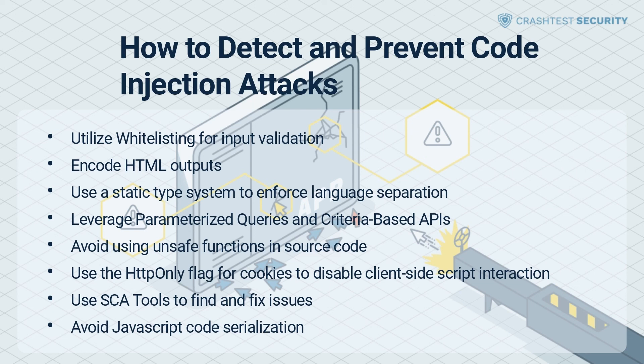Use SAST tools to find and fix issues. Teams should set up automatic static code checking tools to find and eliminate injection vectors in source code. Avoid JavaScript code serialization. Developers use code serialization to rearrange input data into a set of regular functions and expressions. Some versions of JavaScript serialization packages cannot correctly sanitize against untrusted characters in regular expressions. It is recommended as a best practice to avoid serialization unless absolutely necessary.